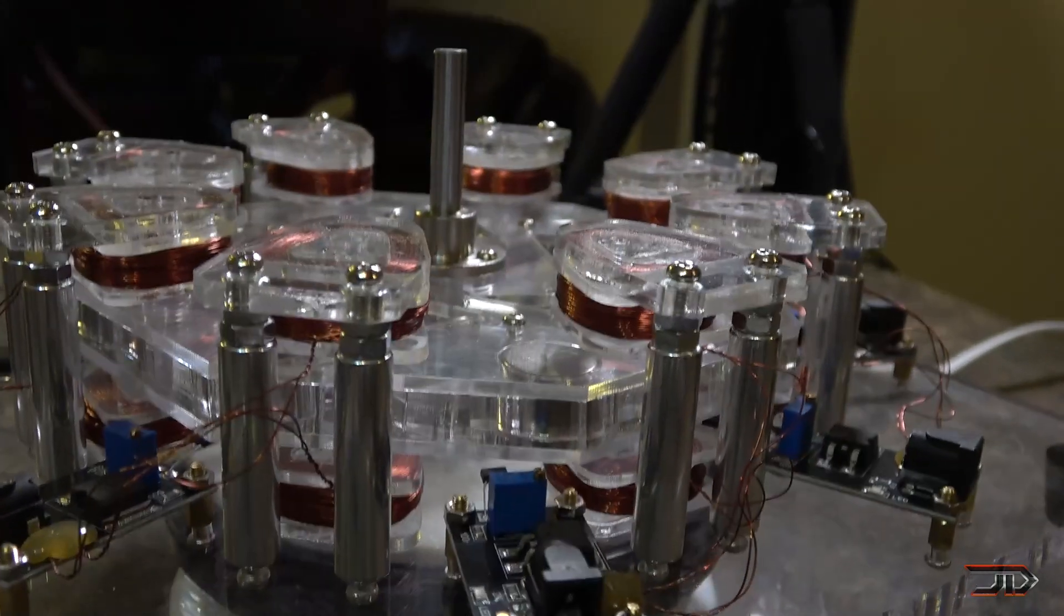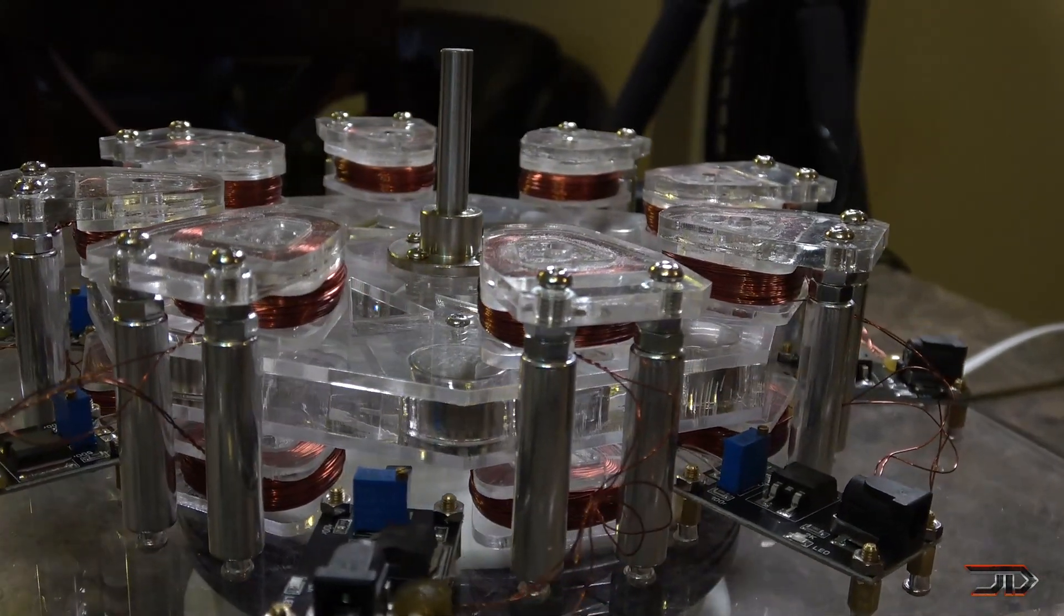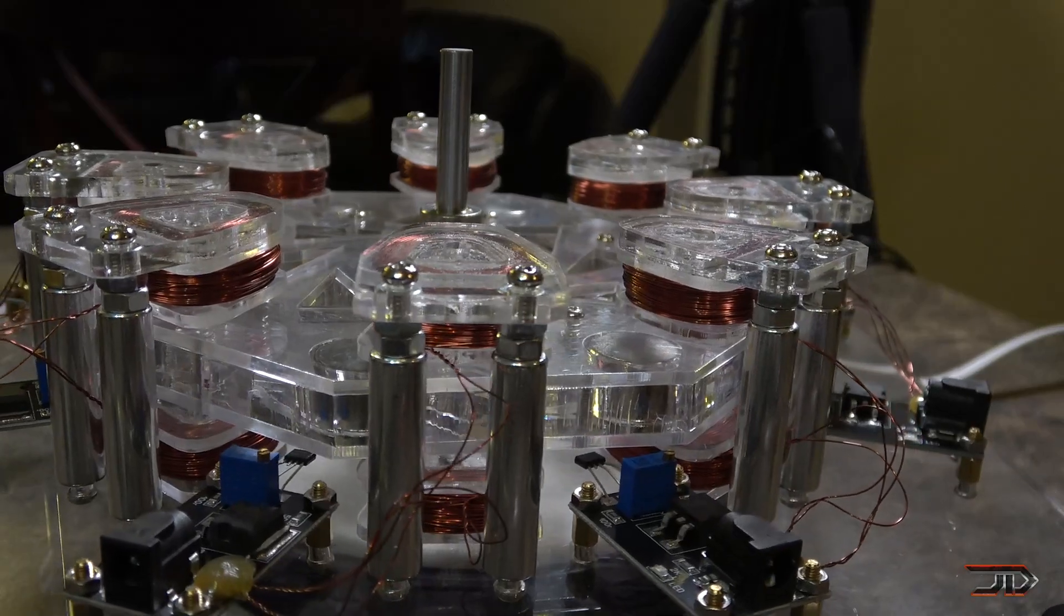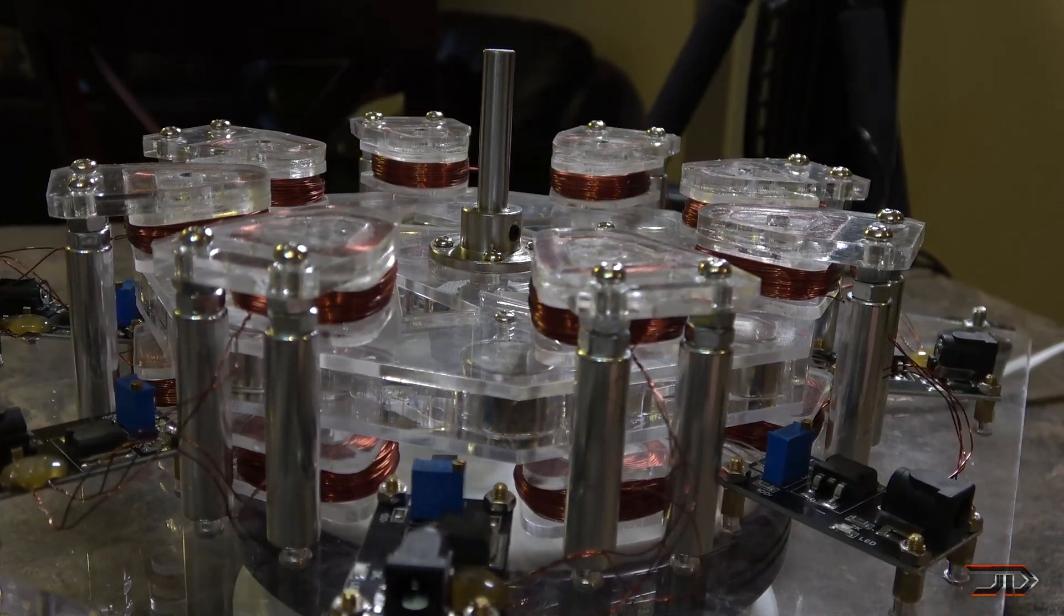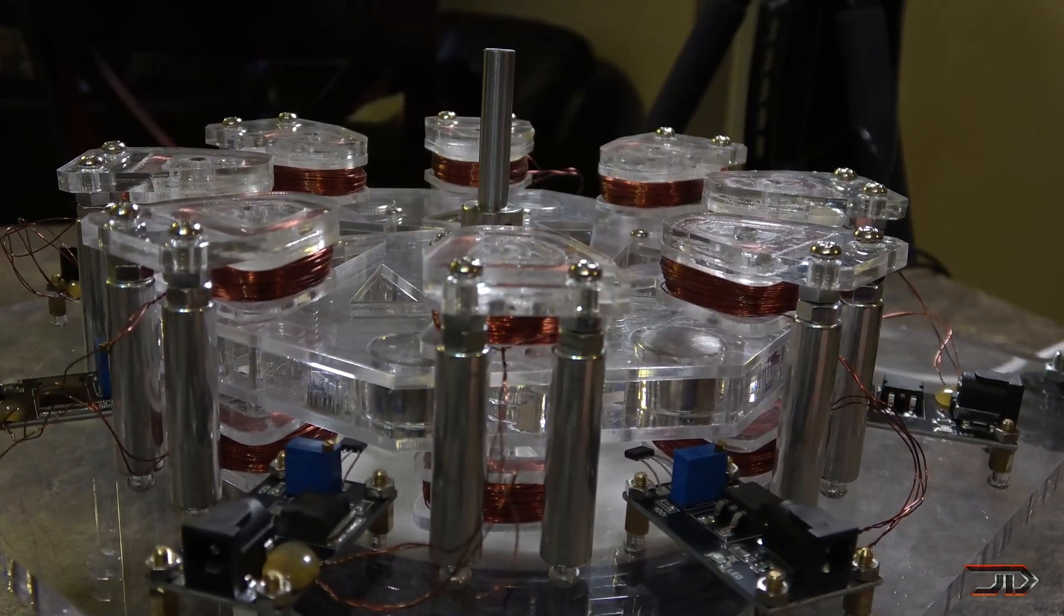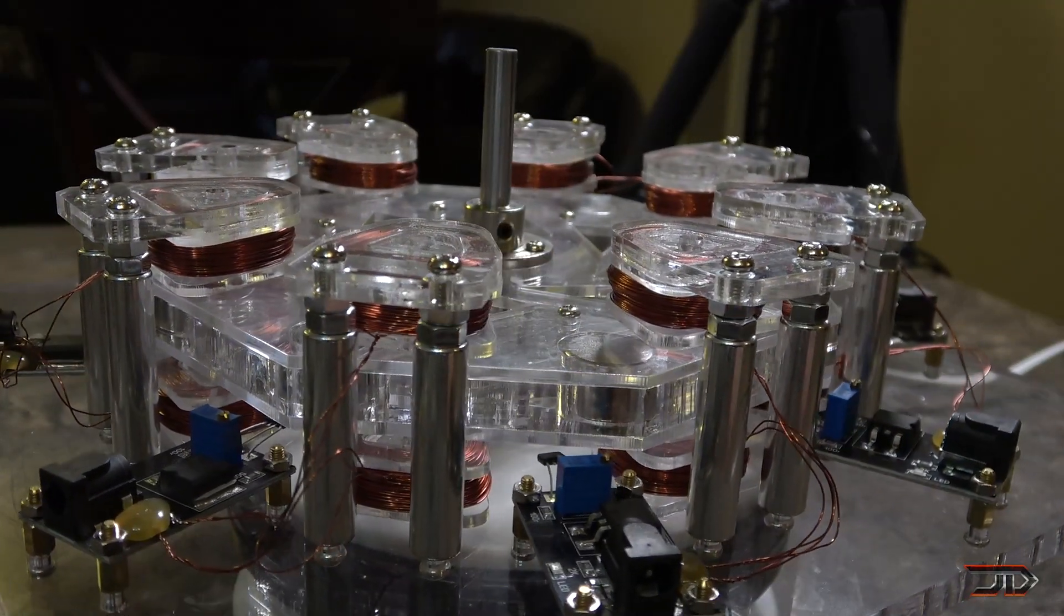These coils are trapezoidal, and they produce a very good uniform field. And I'll leave some links in my description which explain more about coils and the different types of magnetic flux you can get from these coils.